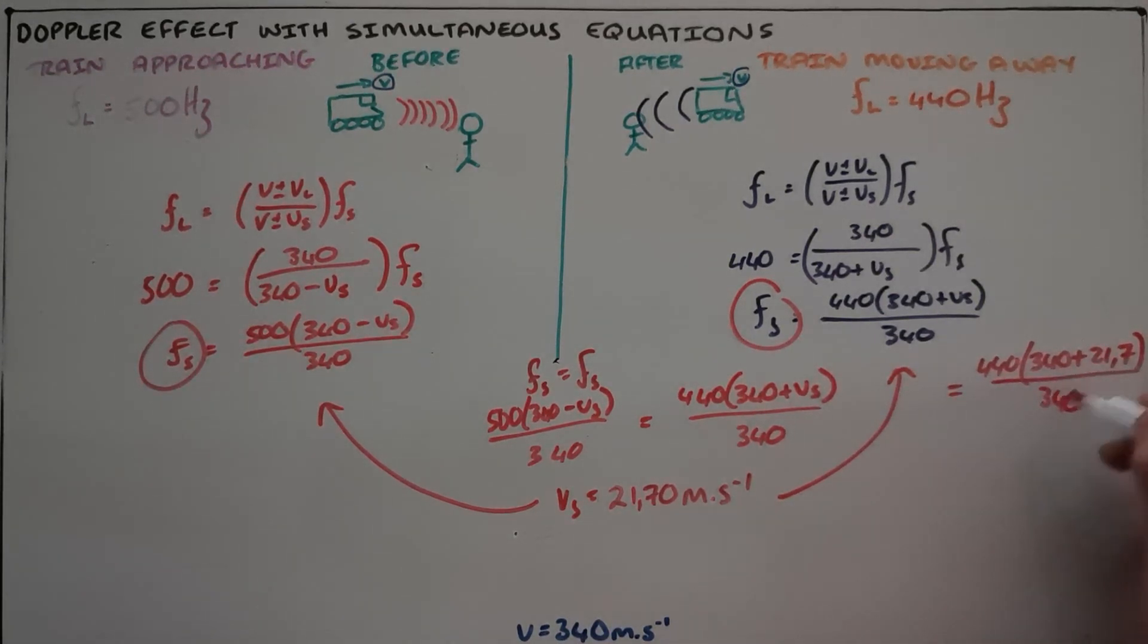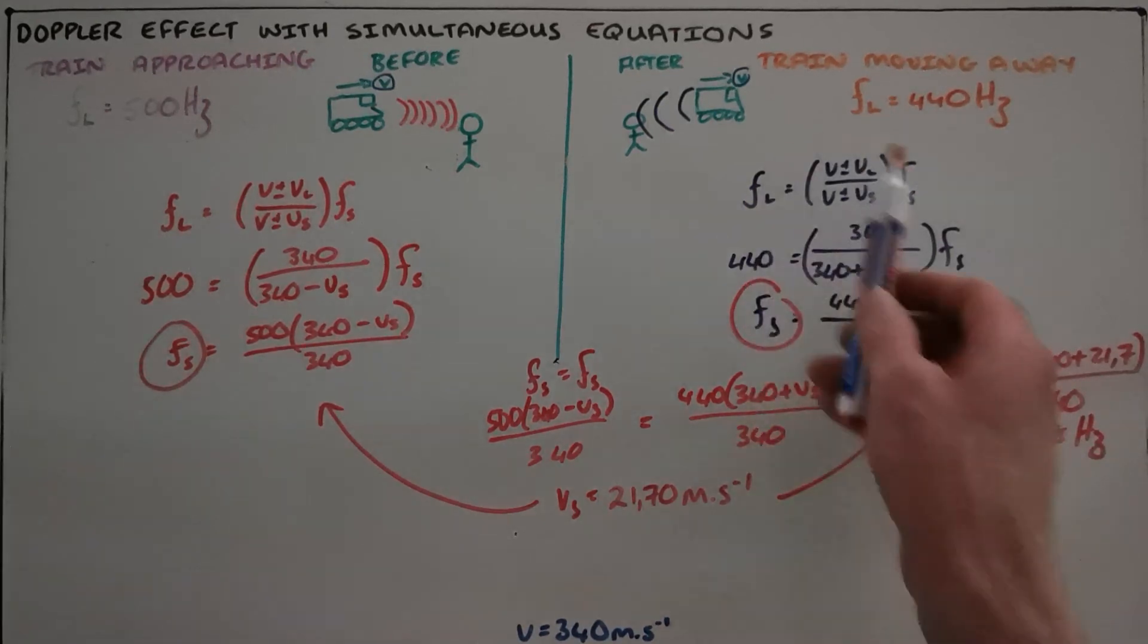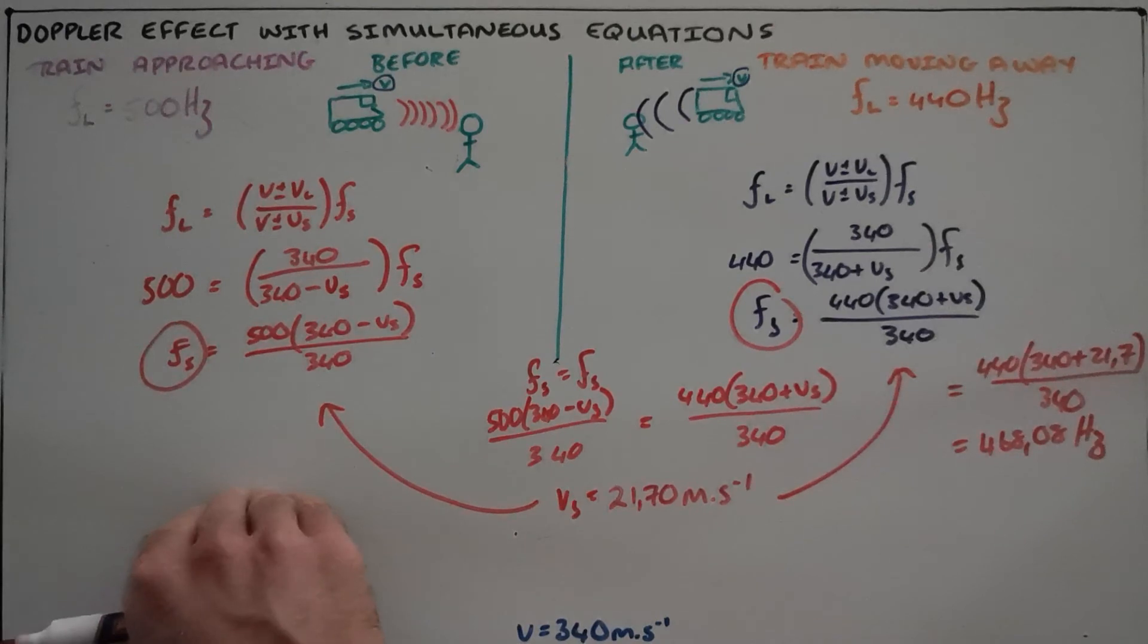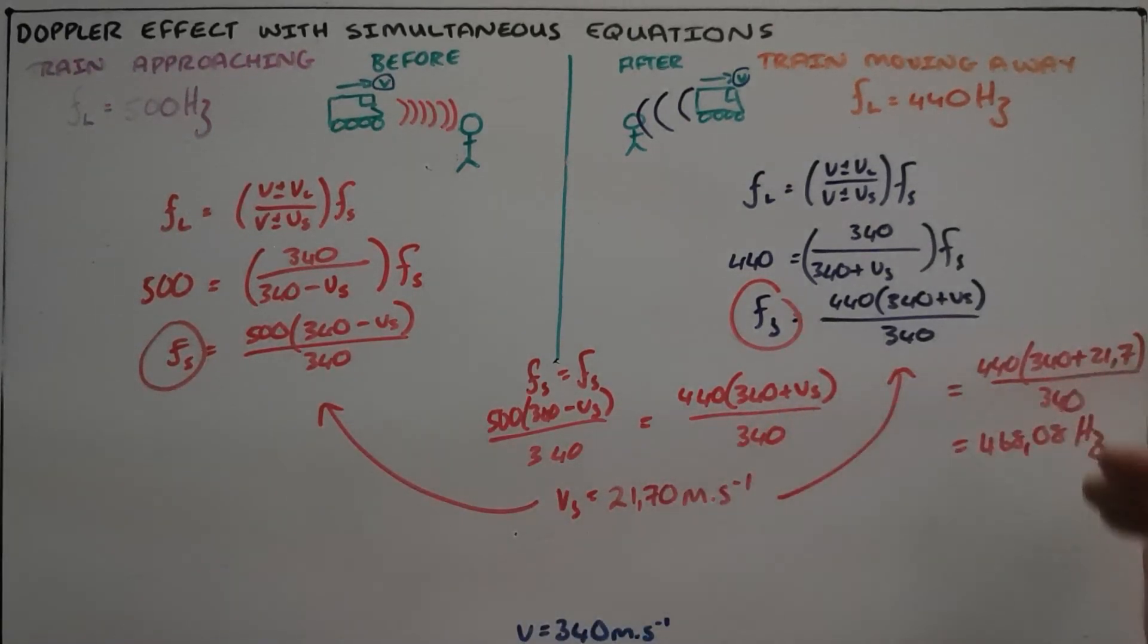And we find that that value is then 468.08 Hertz, the emitted frequency. We can check for ourselves and find that this is the frequency that is heard when the train is approaching and the frequency heard when the train is moving away.